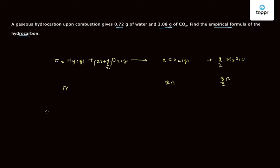We find the number of moles of water. According to our equation, the number of moles of water are N into Y by 2, and this equals 0.72 upon the molecular weight of water, which is 2 into 1 plus 16.